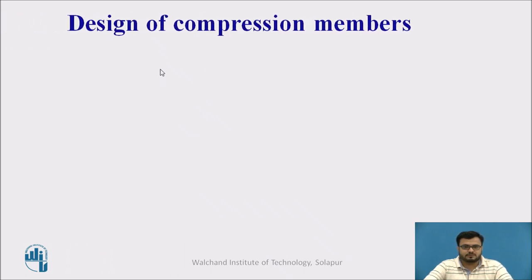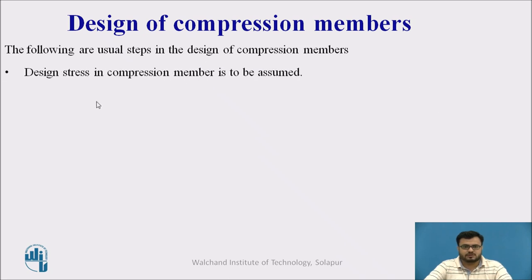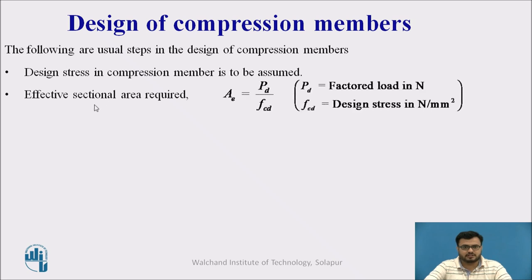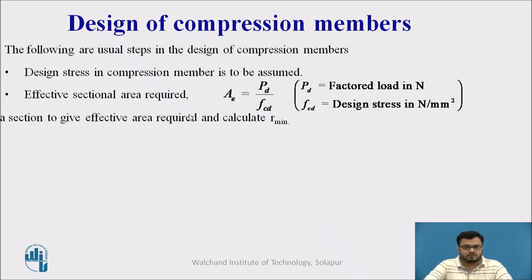Now we will see the design steps for compression members. First, we assume the design stress in the compression member. Then we calculate the effective sectional area using the formula: Area = Load / Stress. The load is given, and with the assumed design stress we calculate the required area. Then we select a section from IS Handbook No. 1 and calculate the value of R minimum.